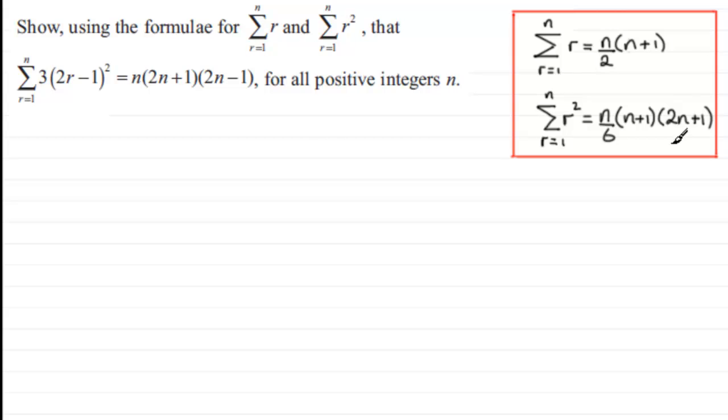But let's start then with what we've got here. We've got sigma r going from 1 to n of 3 times 2r minus 1 all squared. Now the first thing I'd want to do is take out the constant out the front of the sigma. So we'll put that out the front and then next I just want to expand 2r minus 1 all squared. So if we expand that we're going to get 4r squared minus 4r and then plus 1.